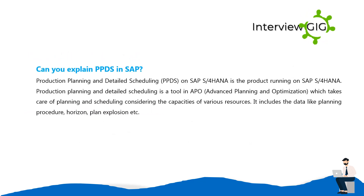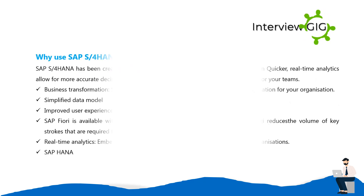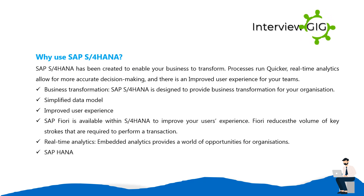Can you explain PPDS in SAP? Production Planning and Detailed Scheduling (PPDS) on SAP S/4HANA is a tool in APO Advanced Planning and Optimization, which takes care of planning and scheduling considering the capacities of various resources. It includes data such as planning procedure, horizon, and plan explosion.